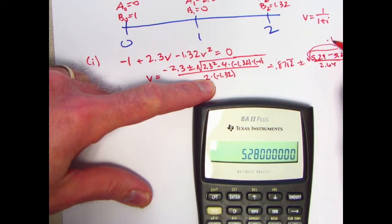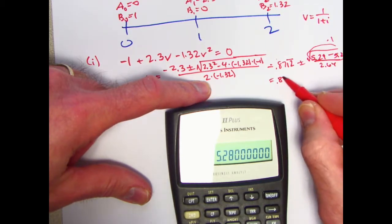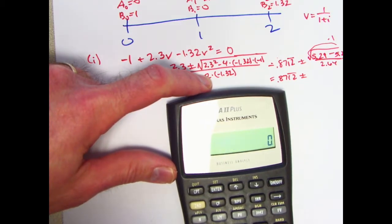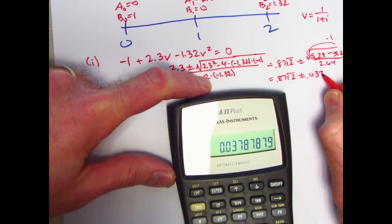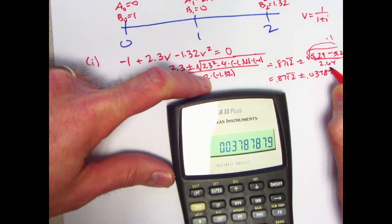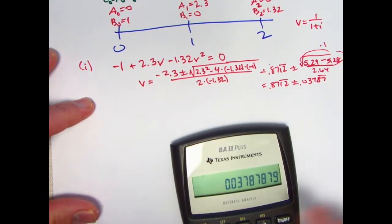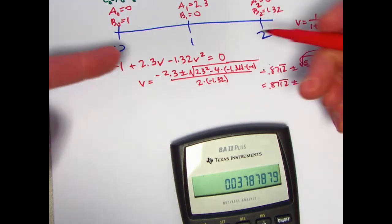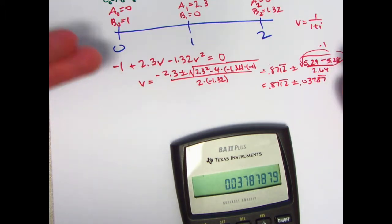What was that? 5.29. 4 times 1.32 is 5.28. The plus or minus is going to make, for this term, the minus sign down there irrelevant. We can just divide this by 2.64. We're going to get a square root of 0.01 here, which will be 0.1. So 0.8712 repeating, plus or minus 0.1 divided by 2.64 is 0.03787, and evidently the 87 repeats.